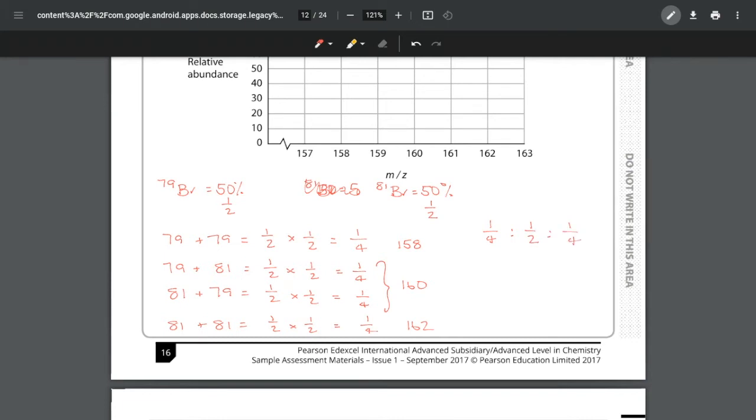In other words, I have a one in four to one in two to one in four chance, which can be simplified to a whole number as 1:2:1. Each of my peaks are at 158, 160, and 162. It's all looking at the probability of getting each of these isotopes.